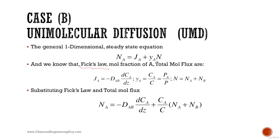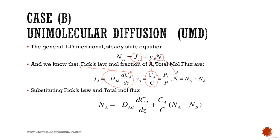According to Fick's law, J_A equals the diffusivity times the driving force, which is the concentration gradient dC_A/dz. We can substitute using molar fraction. The total molar flux is always equal to the sum of all molar fluxes. In this specific case, the molar flux of B is zero because B is stagnant or non-diffusing, so N_B = 0.